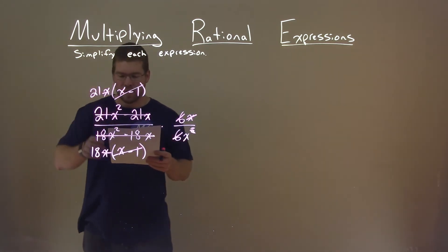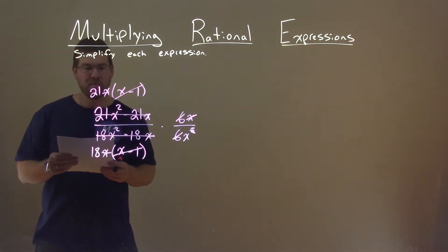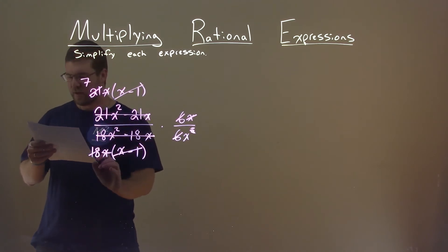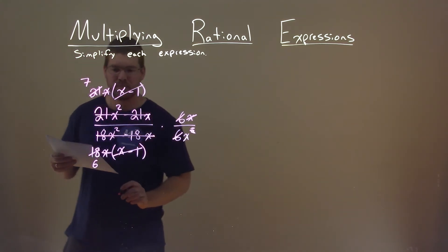And 21 and 18 are both divisible by 3. 21 becomes a 7 and 18 becomes a 6 there. Okay?